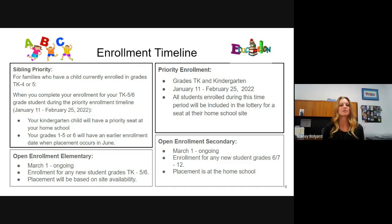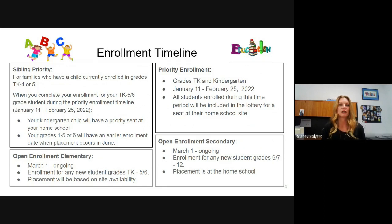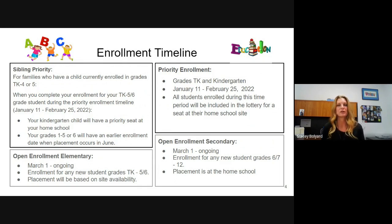Open enrollment starts March 1st for any student in grades TK through 5 or 6. So if you don't have a sibling and your child is in grades 1 to 5 or 1 to 6 for next year, you would enroll starting March 1st. If you haven't moved to Fremont yet and won't make the January 11th to February 25th window, that's okay — enrollment will be ongoing after March 1st and we'll get your child placed in a school whenever you move in.